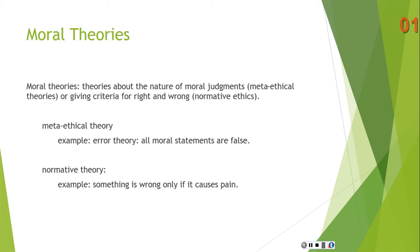So what's a meta-ethical theory? It's a theory about the nature of moral judgments. Can moral judgments be true? Are they true? Are all moral judgments false? Are they the sort of thing capable of being true or false? These are all questions in meta-ethics. An example of a meta-ethical theory would be error theory — the claim that all moral statements are false.